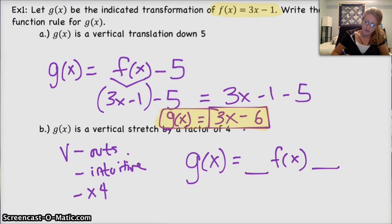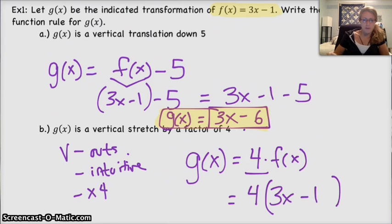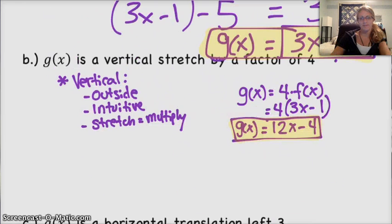So we'll say something like this. G of x has to be equal to f of x. And since it's vertical, something's got to happen outside the function. We can't change the x itself. And we're stretching by a factor of 4. So we multiply the function f of x by 4. So we don't need to add anything. So, again, you take the original function, 3x minus 1, and replace f of x with that, 3x minus 1, and multiply it by 4. Just distribute your 4. You get 12x minus 4. And that is your new g of x.